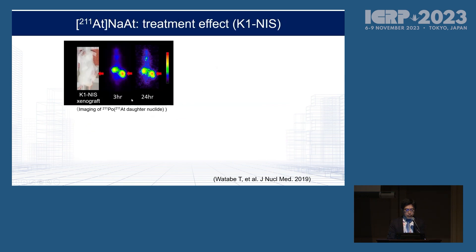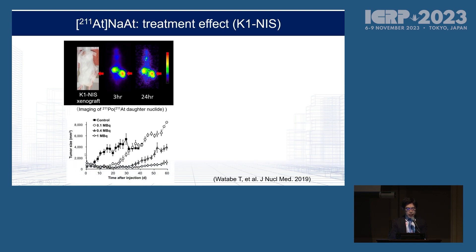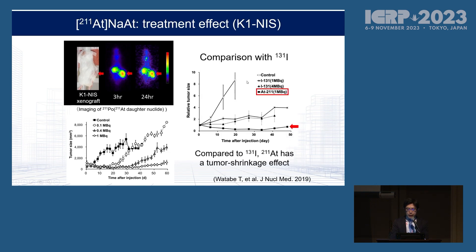This figure shows a general animal model of thyroid cancer with high uptake in the tumor. For therapeutic effect, you can see dose-dependent treatment at 0.1, 0.4, and 1 megabecquerel administration. Comparing this with iodine, Astatine showed tumor shrinkage effect for a long time. It is really effective in the treatment of thyroid cancer in the preclinical setting.